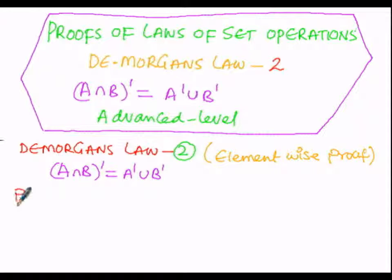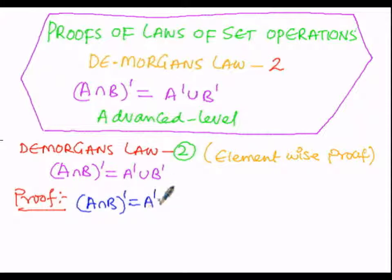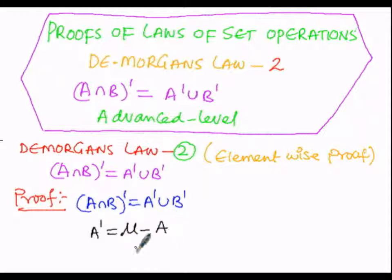The proof starts now. We have to prove the condition that A intersection B whole complement is equals to A complement union B complement. Before proving this, we must know two formulae. The complement of A is given by mu minus A — that is, set A must be subtracted from the universal set.